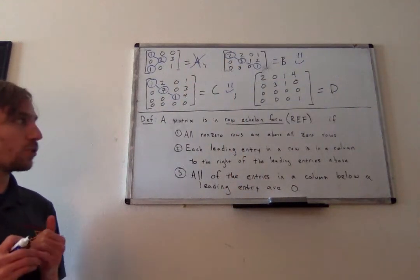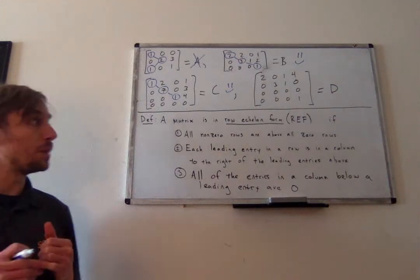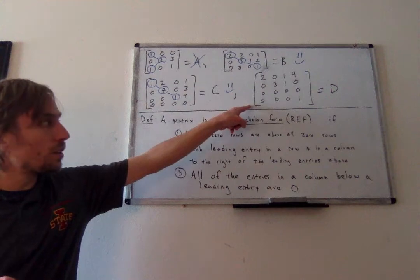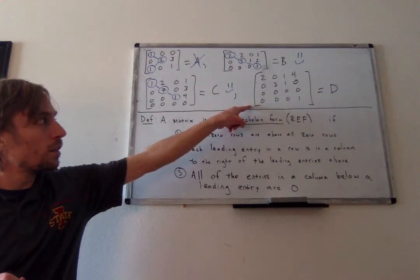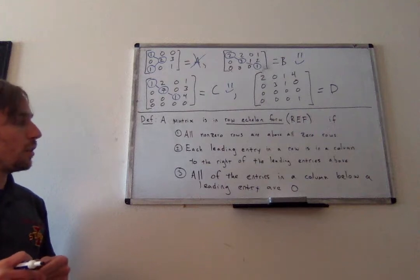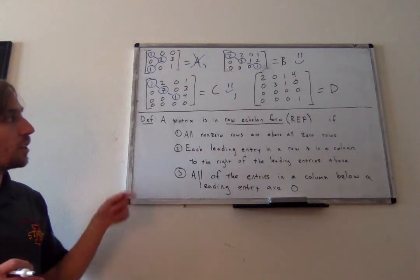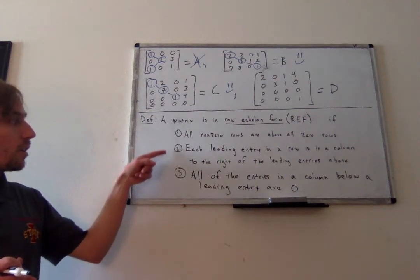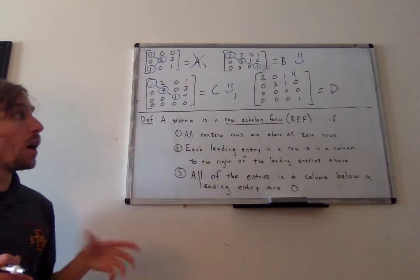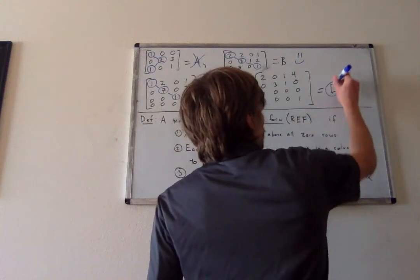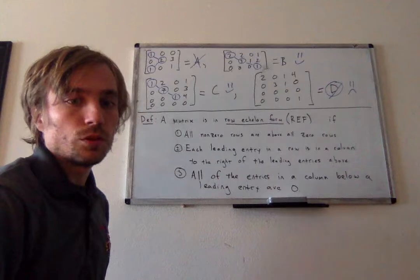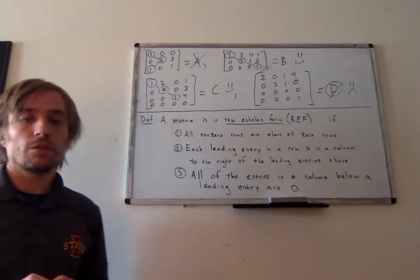Matrix D is going to fail very quickly. There is a non-zero row — 0, 0, 0, 1 — and right above it there is a row of all zeros. So property one is not satisfied. Interestingly, properties two and three are both satisfied, but property one is the only property D fails, and so D is not in row echelon form.